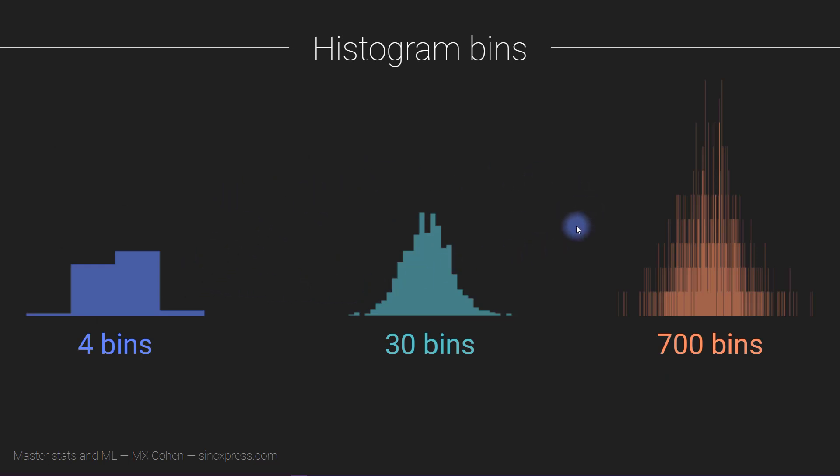So this is a copy of a slide you've seen before when I first introduced you to histograms. The idea here is that these are exactly the same data set. All three histograms come from exactly the same set of numbers, just using a different number of bins. In this case, it was really clear that four bins is too few, 700 bins is too many, and 30 bins seems reasonable.